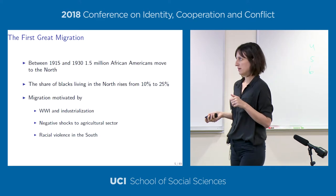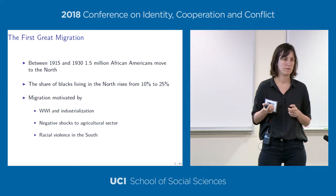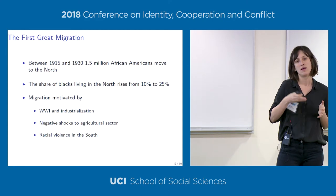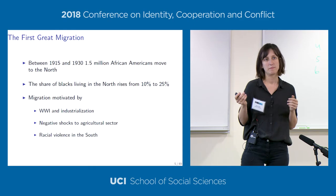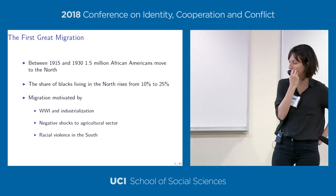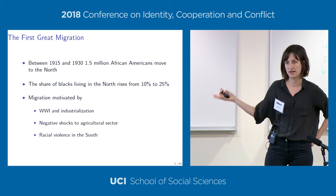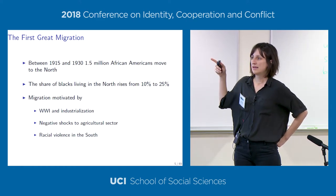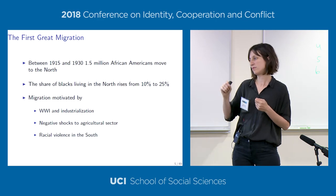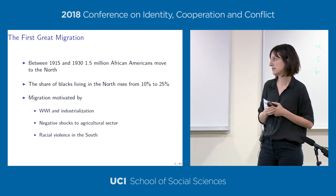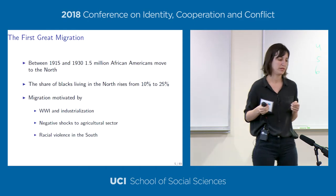The First Great Migration starts during World War I and lasts essentially until 1930—the first time blacks moved en masse to the North. During this period, about one and a half million African Americans moved outside the South. There is a second wave after World War II lasting into the 1960s and 70s, but for our purposes the first time this group appears is more important than sheer numbers. The share of blacks living in the North rises from 10 to 25 percent during this period, driven by a combination of push and pull factors.